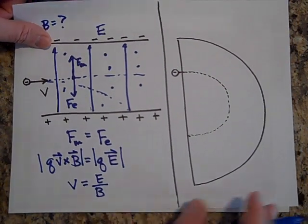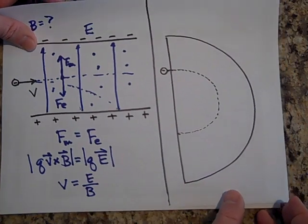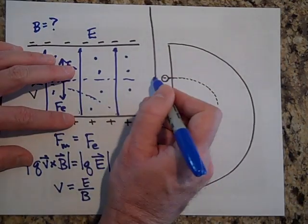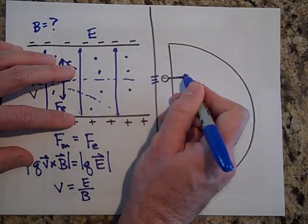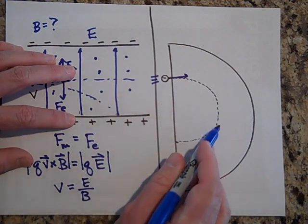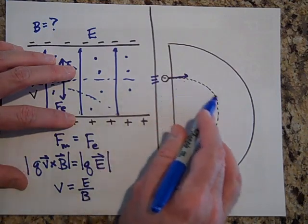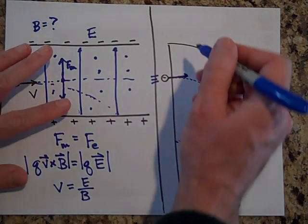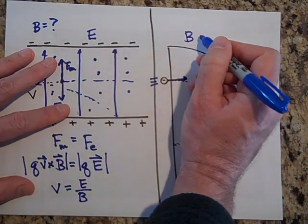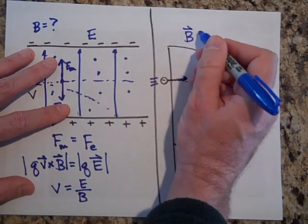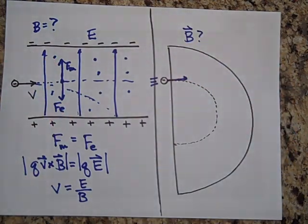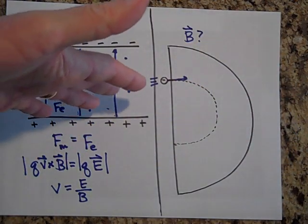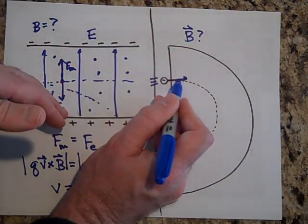Next one. Here's an electron, it's zipping this way, and I'd like it to bend when it goes into this magnetic field. I'd like it to bend and go around a circle like that. So which way should the magnetic field be? What direction should the magnetic field be?